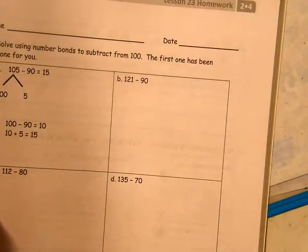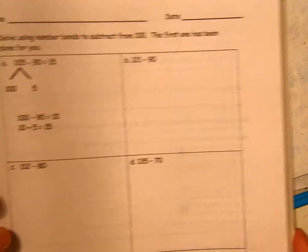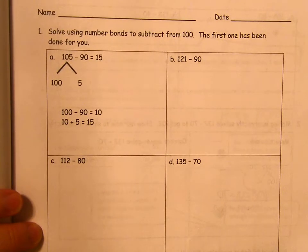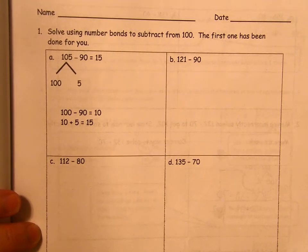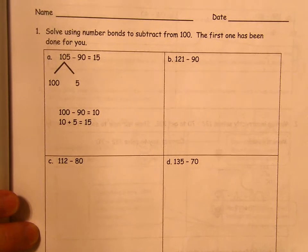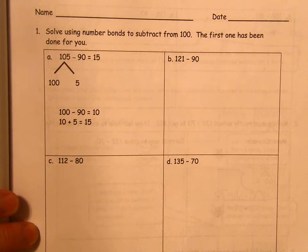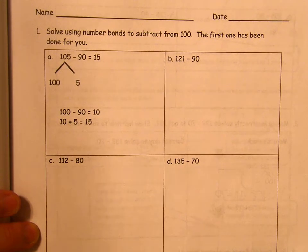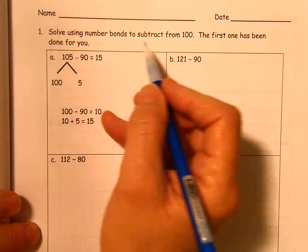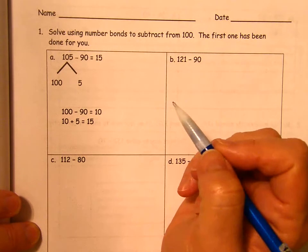So turning to page 99, we're going to get started and they've started the first one for you. These first ones, these first equations or expressions actually, because they don't have the equal sign. There's no word problem. All we're going to do is get that number bond so that we can subtract from 100.